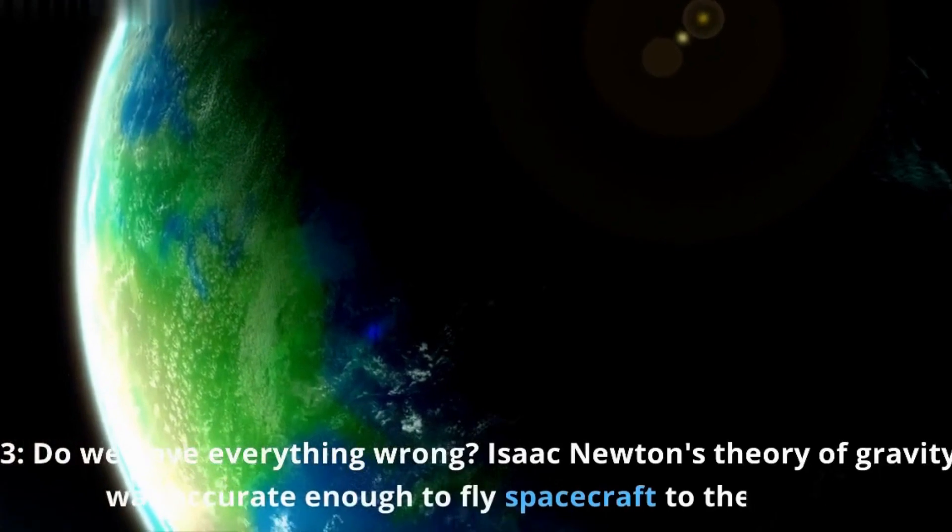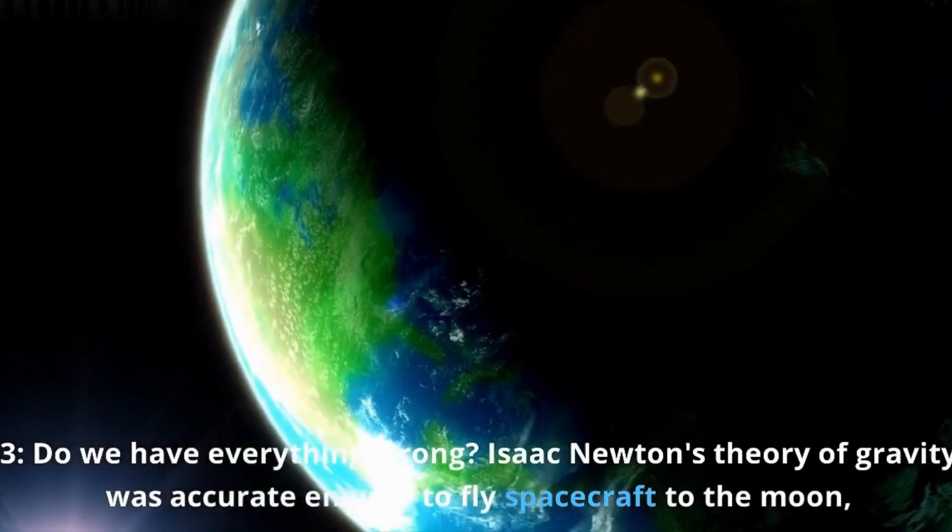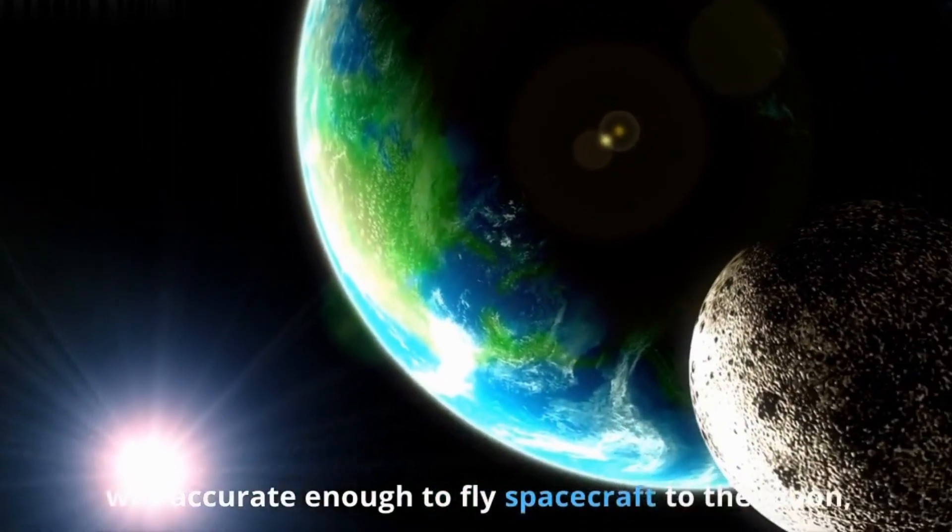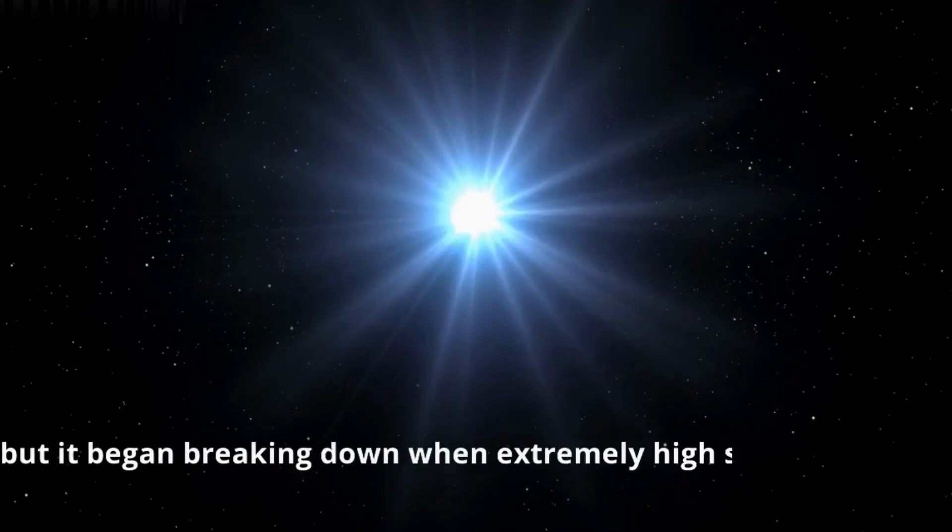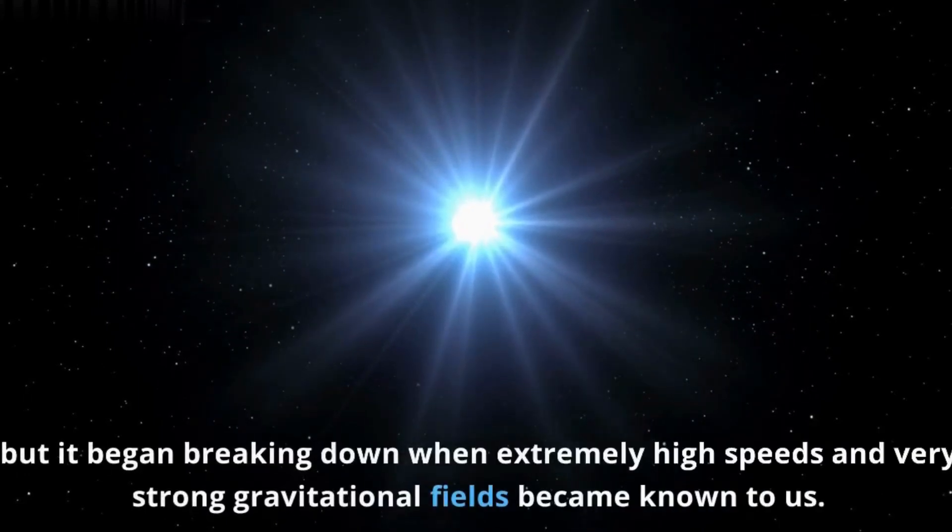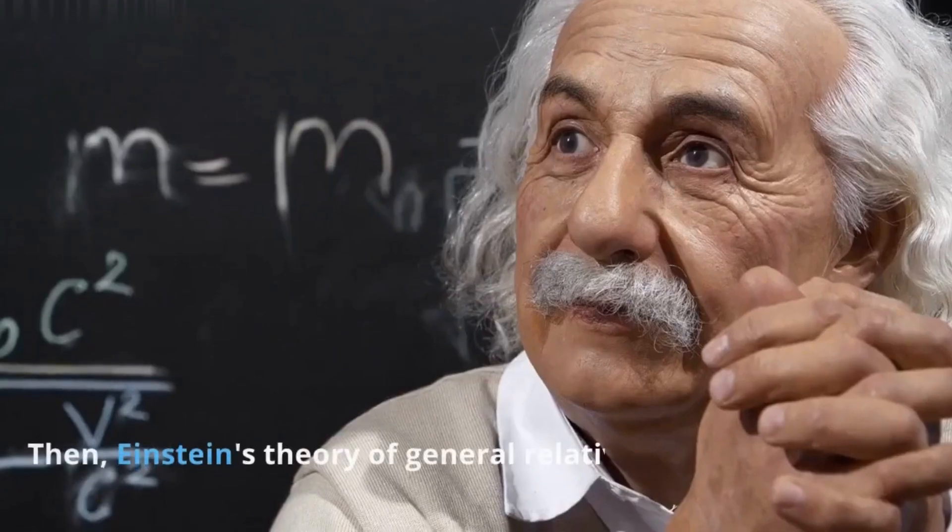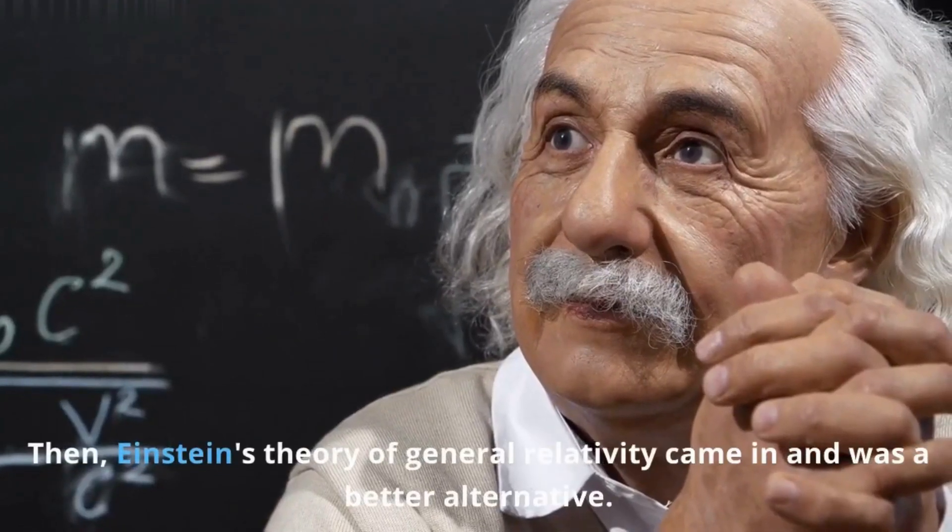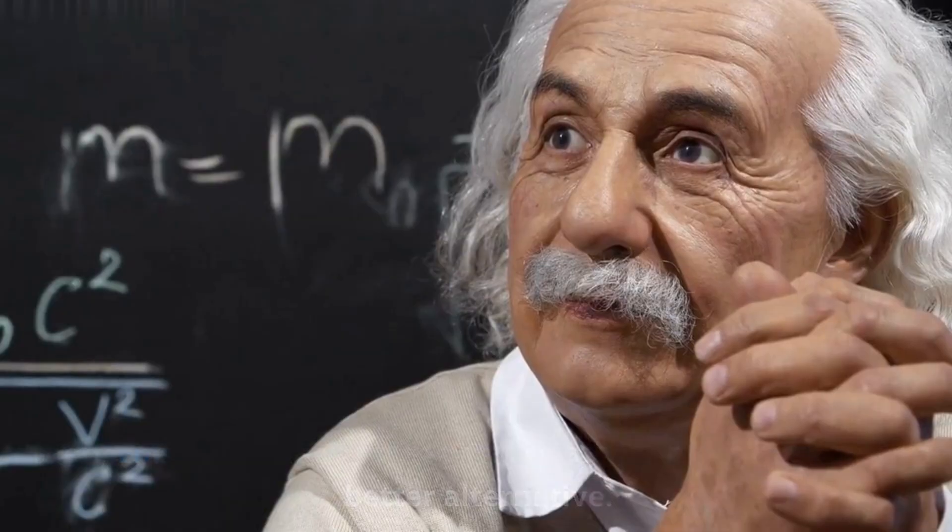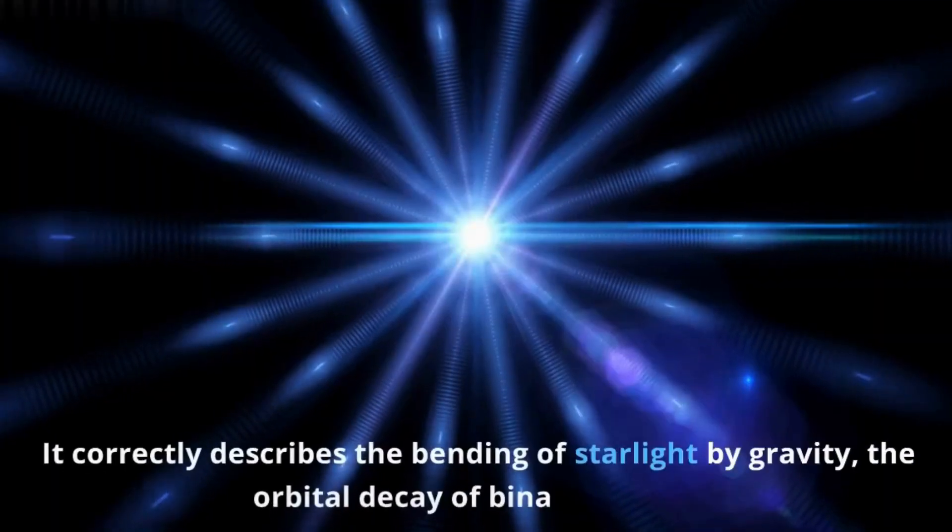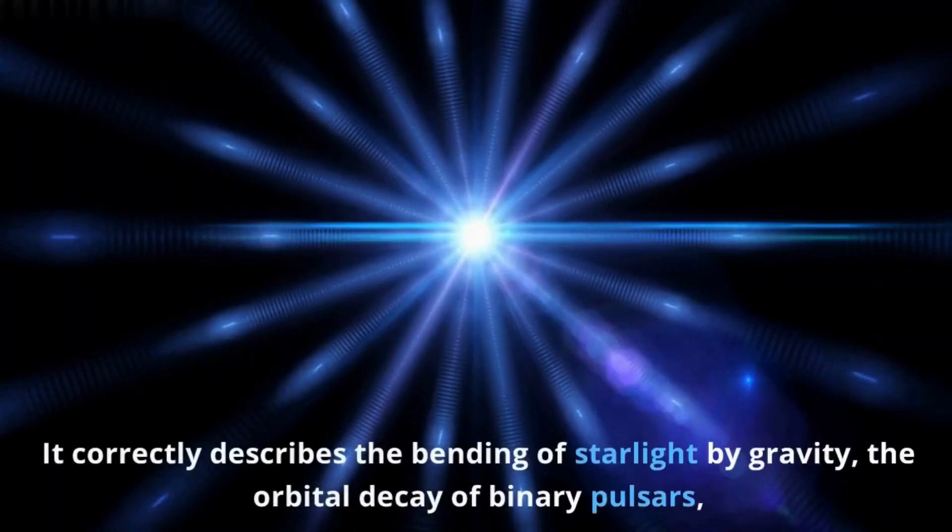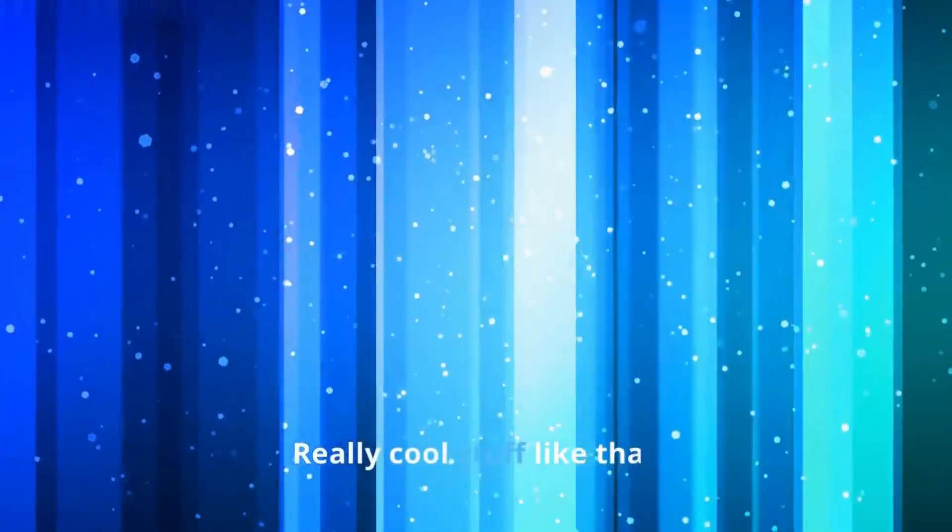Number 3. Do we have everything wrong? Isaac Newton's theory of gravity was accurate enough to fly spacecraft to the moon. But it began breaking down when extremely high speeds and very strong gravitational fields became known to us. Then, Einstein's theory of general relativity came in and was a better alternative. It correctly describes the bending of starlight by gravity, the orbital decay of binary pulsars, and the warping of space-time around a black hole. Really cool stuff like that.